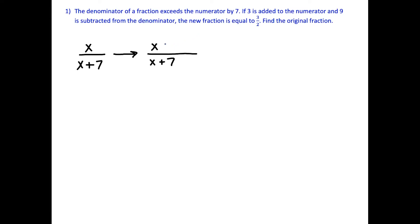When we read that second sentence, if 3 is added to the numerator, so let's add 3 to the numerator, and 9 is subtracted from the denominator. So we'll subtract 9 from the denominator. The new fraction is equal to 3 over 2. So now we just set this equal to 3 over 2.